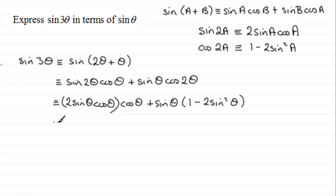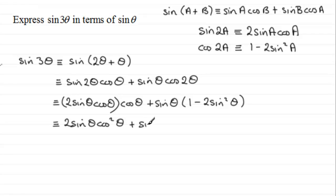Now we expand the brackets. The first factor multiplied by cos(θ) gives us 2sin(θ)cos²(θ). Then expanding the second bracket: sin(θ) × 1 = +sin(θ), and sin(θ) × (-2sin²θ) = -2sin³(θ).